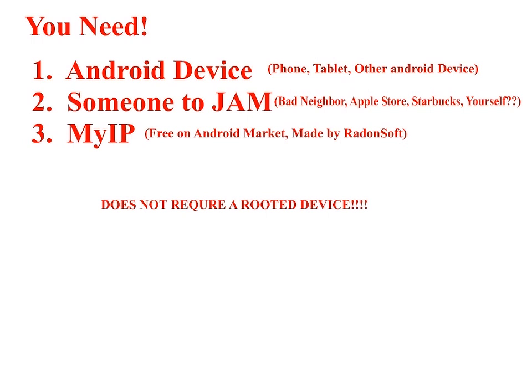Next, you obviously need a network that you're going to jam. I personally prefer Apple Stores and Starbucks because Apple is just evil, and Starbucks — it's just funny to watch everybody walk out. The next thing you're going to need is a program for your phone called My IP. It's a free Android app from Raidensoft. Get it from the market — easy to find.